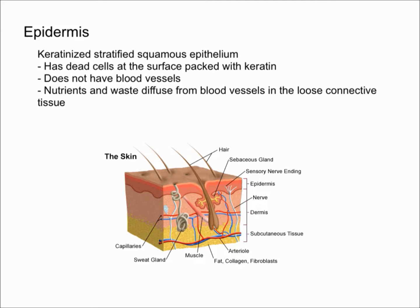The epidermis does not have blood vessels, so in order for nutrients and waste to get around, they have to diffuse from the blood vessels in the loose connective tissue. The loose connective tissue has blood vessels that supply nutrients to the epidermis by diffusion, and also take away waste by diffusion.